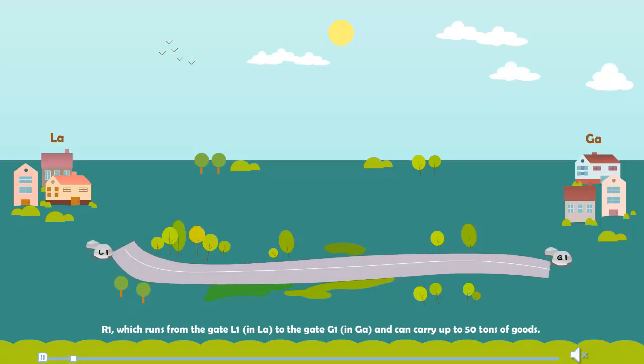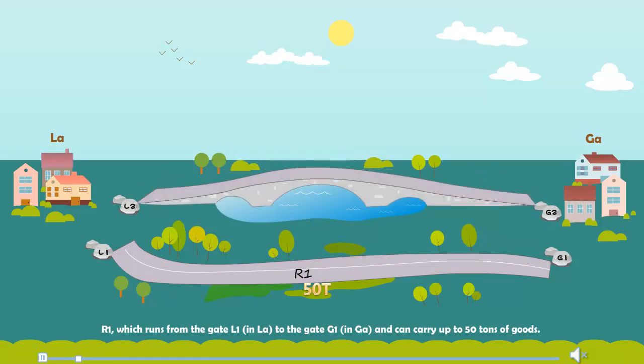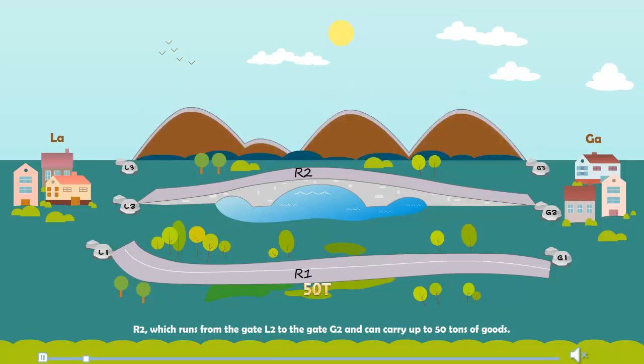R1, which runs from the gate L1 in La to the gate G1 in Ga, and can carry up to 50 tons of goods. R2, which runs from the gate L2 to the gate G2 and can carry up to 50 tons of goods. R3, which runs from gate L3 to the gate G3 and can carry up to 50 tons of goods.